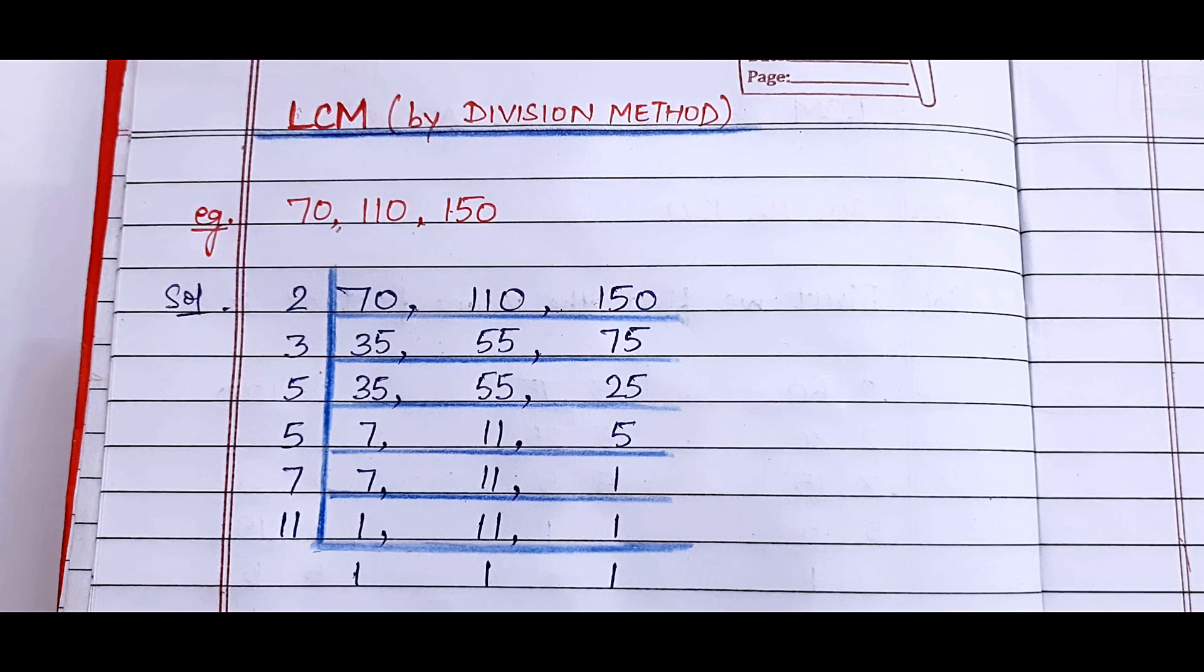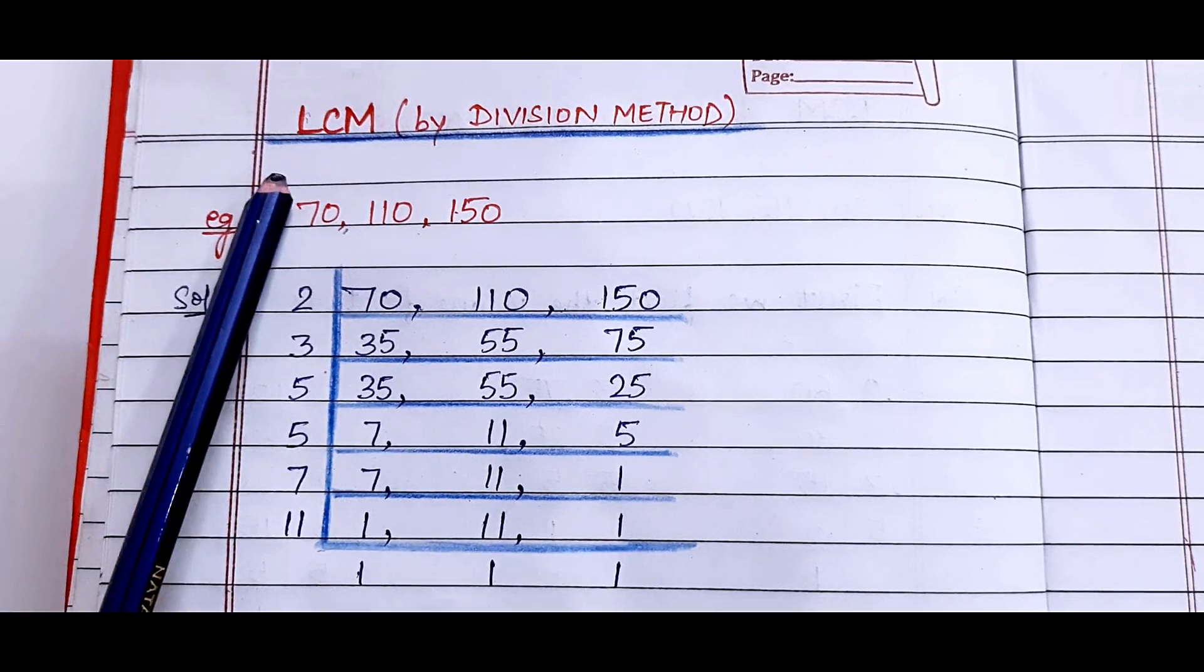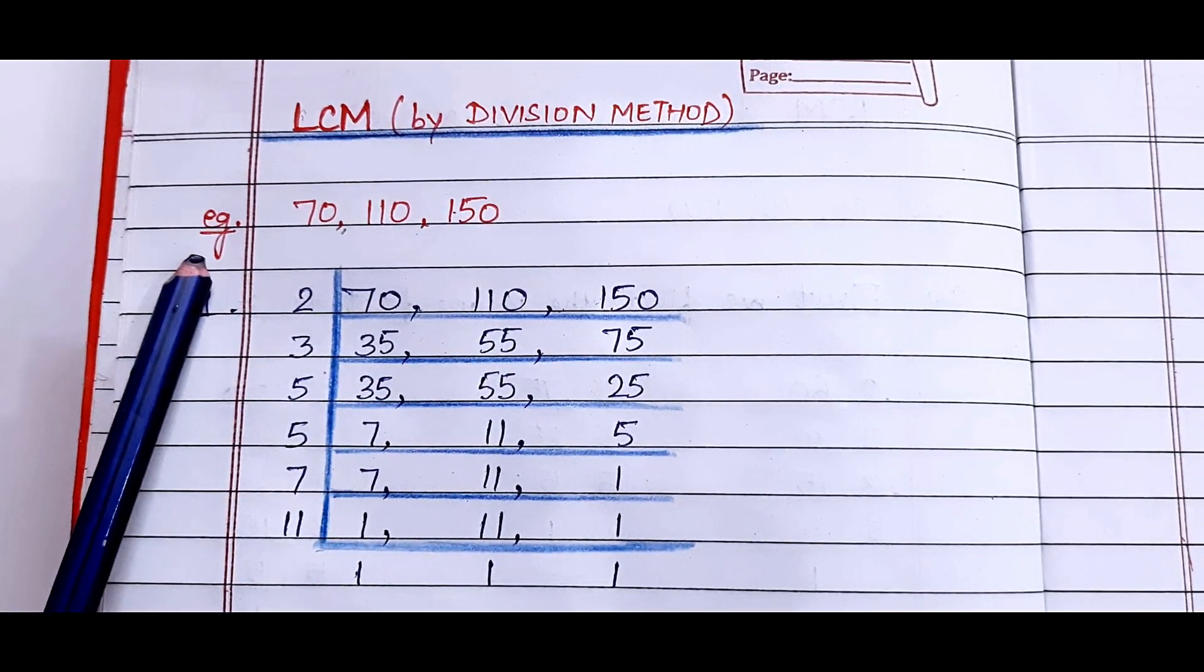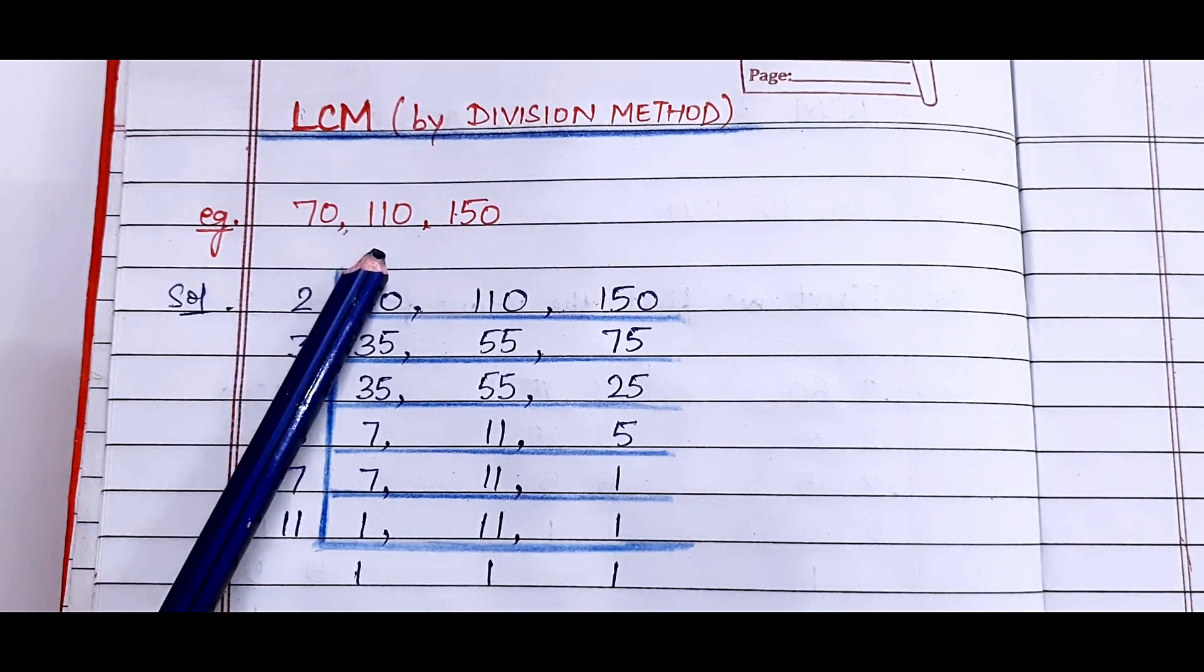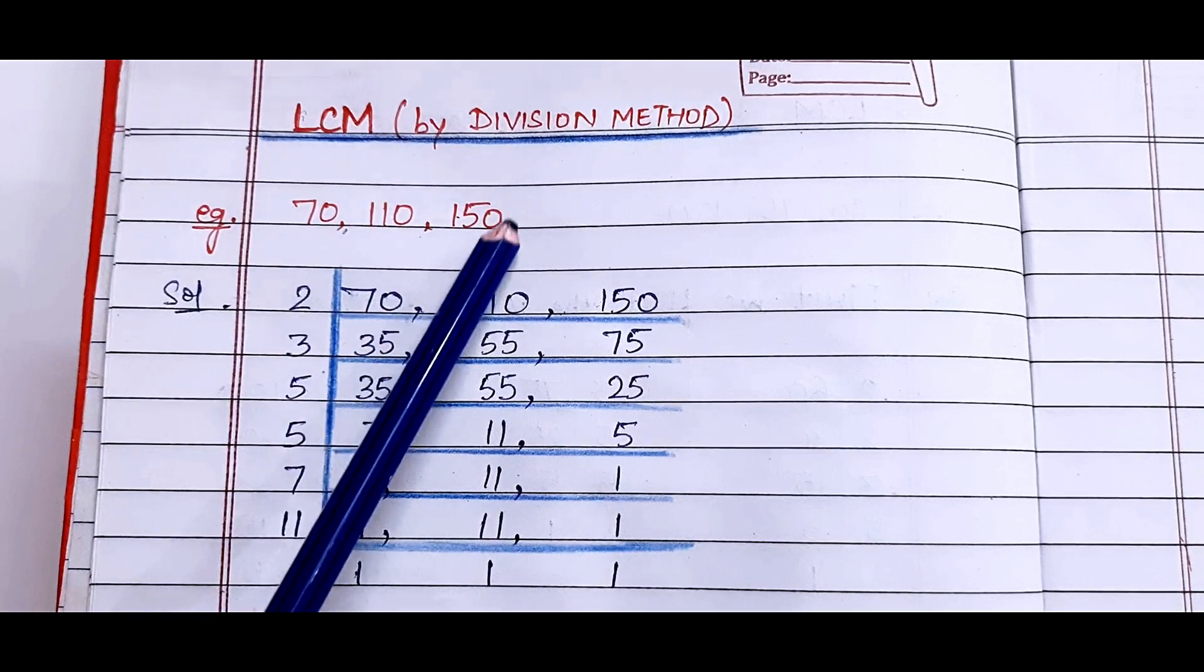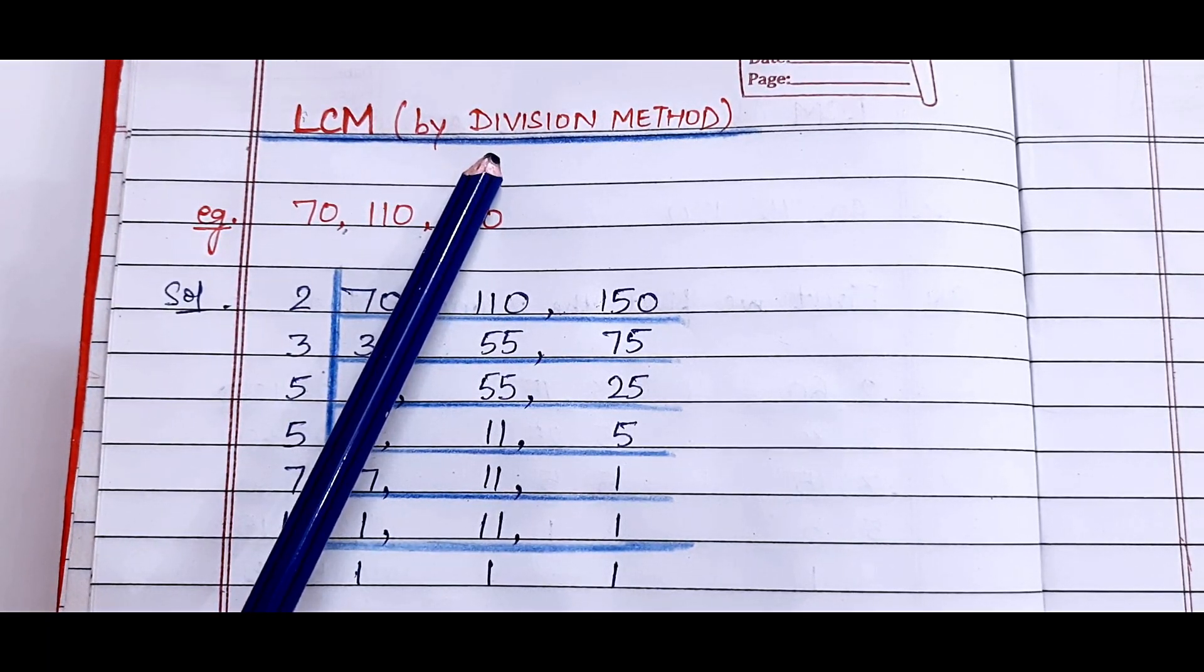Good morning everyone. Today in this video I will explain how to find out the LCM by division method. See the example: 70, 110 and 150. We have to find out the LCM of these numbers using the division method. So let's start with it.